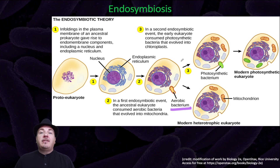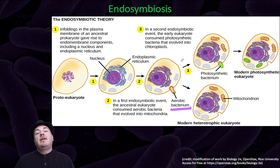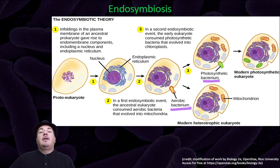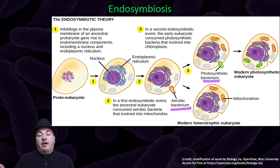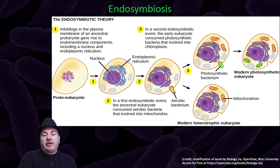Over the evolutionary time scale, that prokaryotic cell lost its individuality and became the mitochondria. Similarly, there was a bacteria that could do photosynthesis. The eukaryotic cell went to eat that prokaryotic cell, and again over the evolutionary time scale, it lost its individuality and became the chloroplasts. There are bacteria that can do photosynthesis. This is how we got these two organelles through the theory of endosymbiosis.